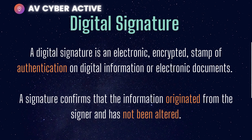So what is a digital signature? A digital signature is an electronic or encrypted stamp of authentication on digital information or electronic documents. It is basically a signature that confirms that the information originated from the signer and has not been altered. So basically, it is a proof of origin.